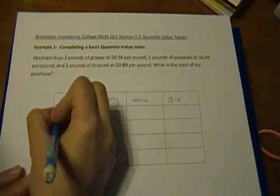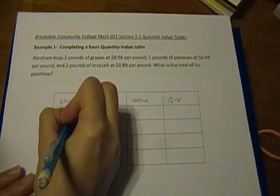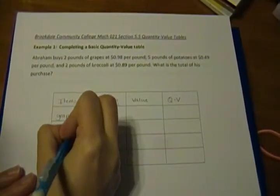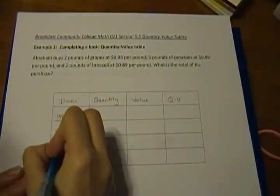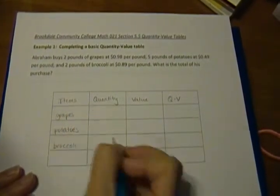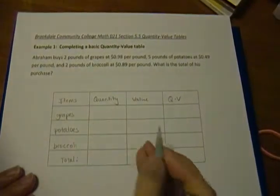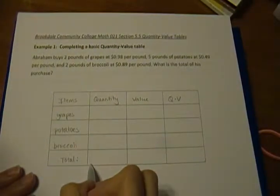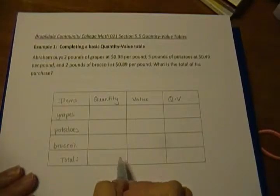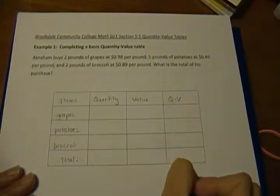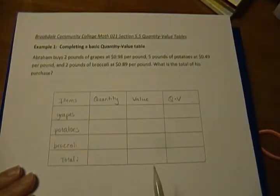So we have grapes, we have potatoes, and we have broccoli. And this last box we write in total because the last box for the quantity and the last box for the QV columns, we're going to fill in their totals.